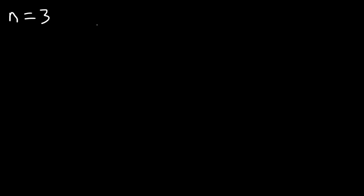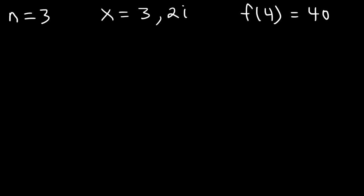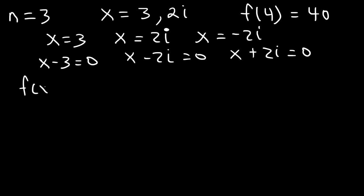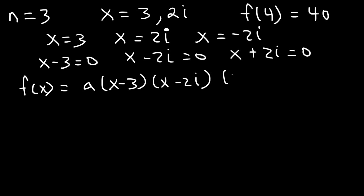Now let's work on another example. This polynomial function has a degree of 3, with zeros 3 and 2i, and f of 4 is equal to 40. If you have an imaginary number, it always comes in pairs, so the other zero is going to be negative 2i. Converting to factors: x minus 3, x minus 2i, and x plus 2i. So the function equals a times x minus 3 times x minus 2i times x plus 2i.